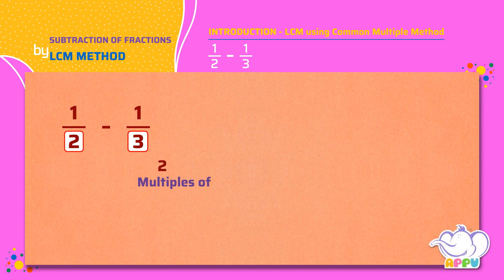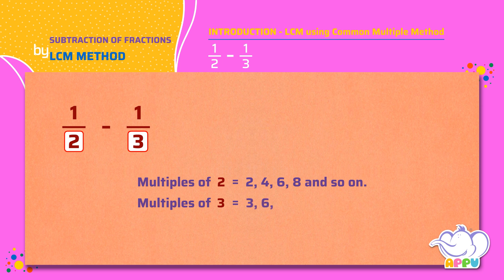Multiples of 2 equals 2, 4, 6, 8, and so on. Multiples of 3 equals 3, 6, 9, and so on. We see that 6 is a common multiple of 2 and 3. So let's make the denominator the same as 6.